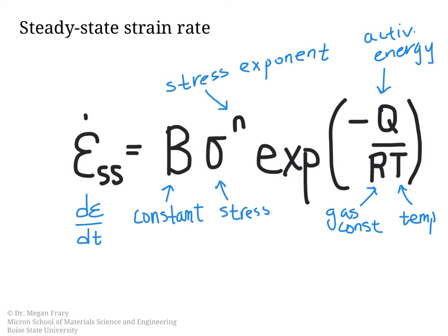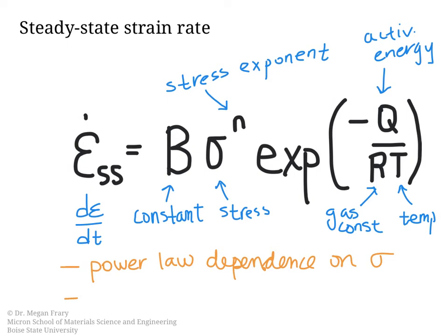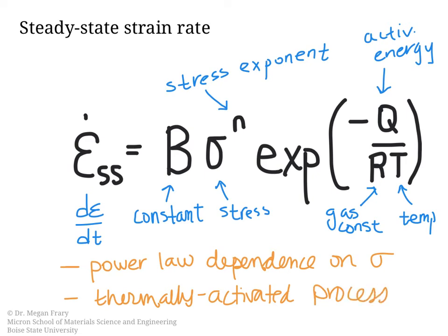A couple of things to note about this equation: it has a power law dependence on stress — for example, stress to the third or fifth power. The second key point is that creep is clearly a thermally activated process, because it has Arrhenius-type behavior in the term e to the minus Q over RT. That tells us it's because of the high temperature that the deformation is able to take place.